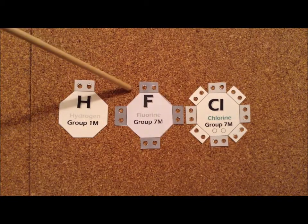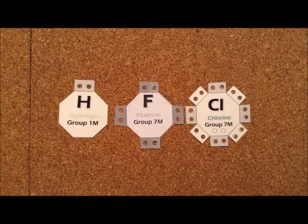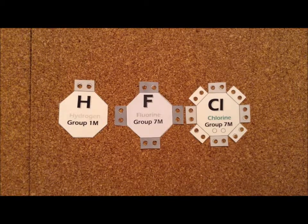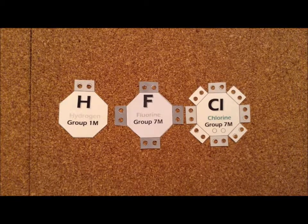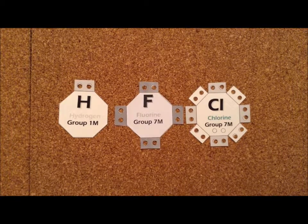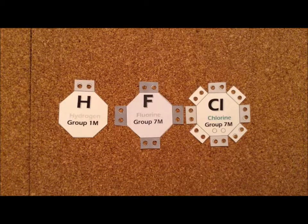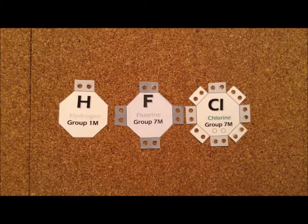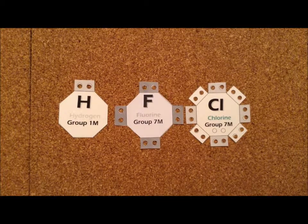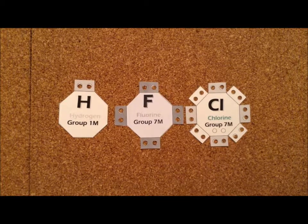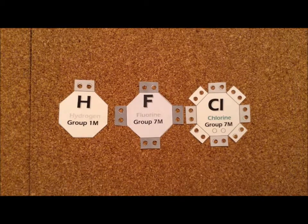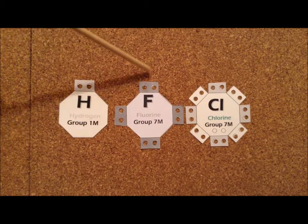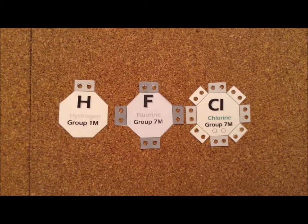Fluorine, on the other hand, is on the second row, so quantum number n equals 2. We have both 2s and 2p orbitals available. There is a single 2s orbital and three different 2p orbitals. Since each of those 1 plus 3 equals 4 total orbitals can each hold two electrons, fluorine in its outermost valence shell can hold up to eight electrons. We represented that by four of these gray shaded boxes, each with two holes in it.